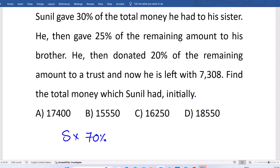Sunil times 70% because that's the remaining. 30% gone. Now, among the remaining, 25% is given to brother. So among the remaining, only 75% is available. Why 75%? Because 25% is gone.